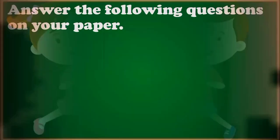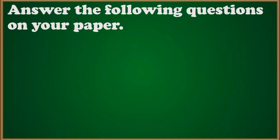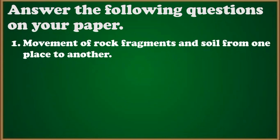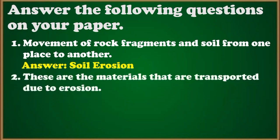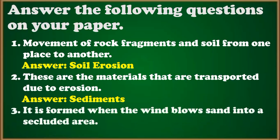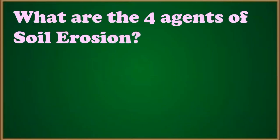Now it's activity time. I want you to answer the following questions on your paper. First question: it is the movement of rock fragments and soil from one place to another — what is it? The answer is soil erosion. Second question: these are the materials that are transported due to soil erosion. Third question: what are the four agents of soil erosion?